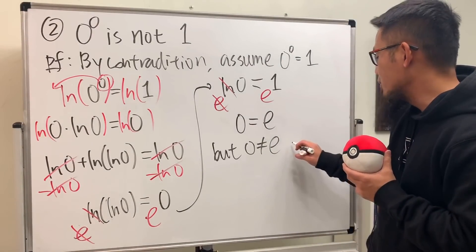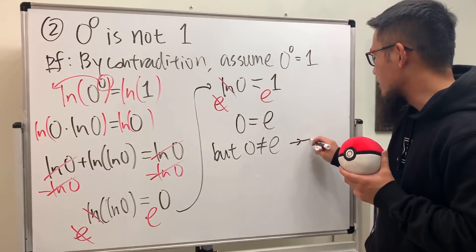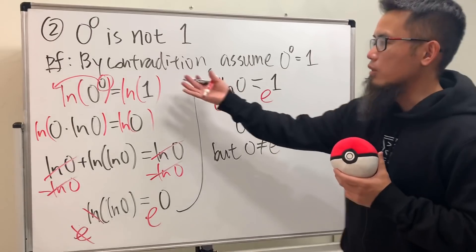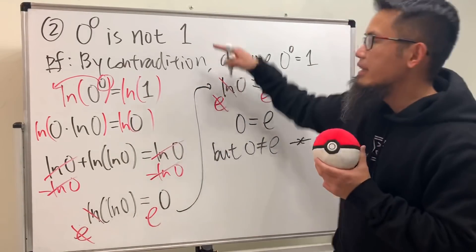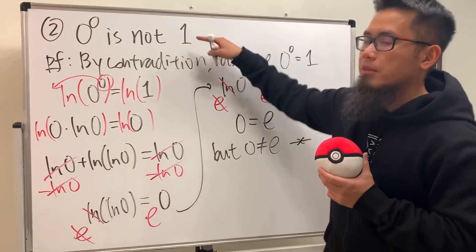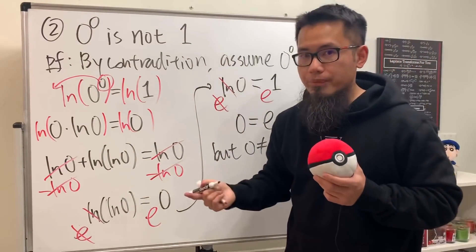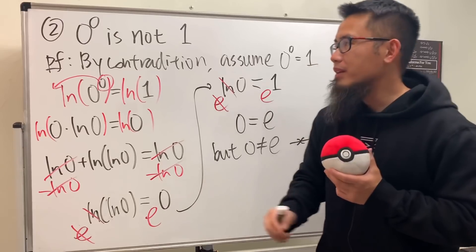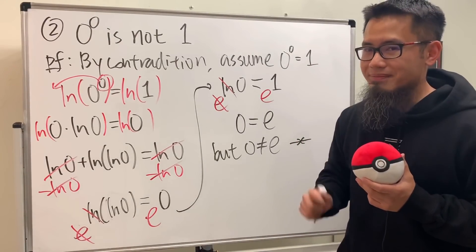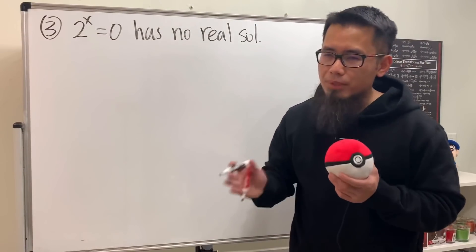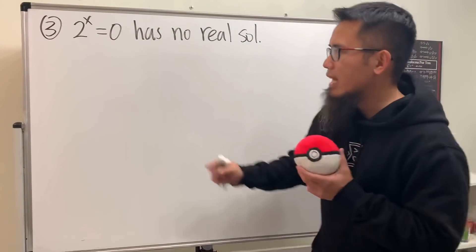This completes the contradiction proof, meaning the original statement — zero to the zero is not equal to one — is true. That's the end of proof two.